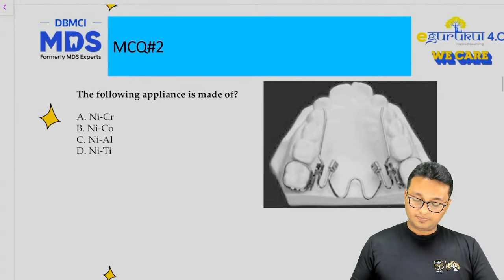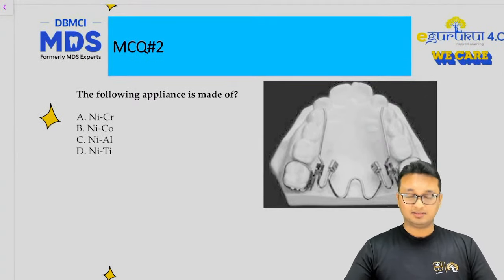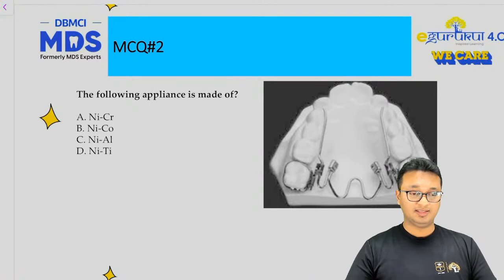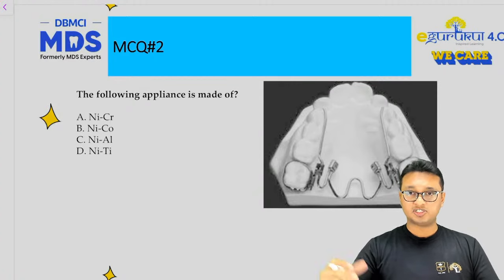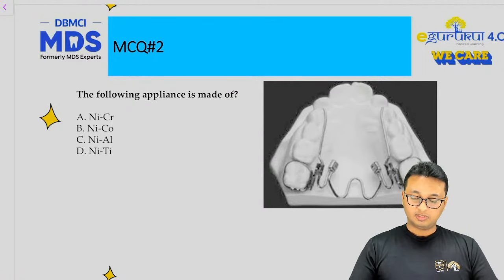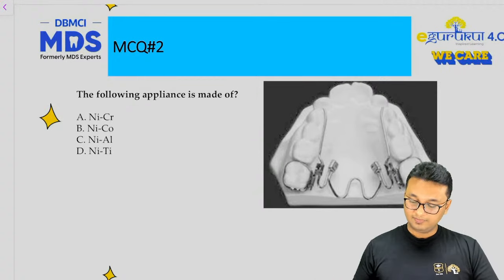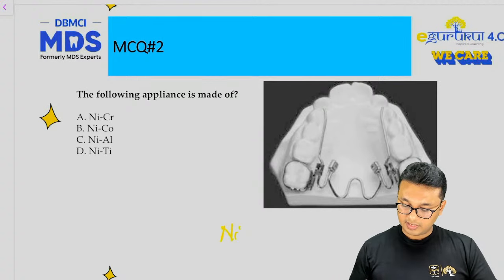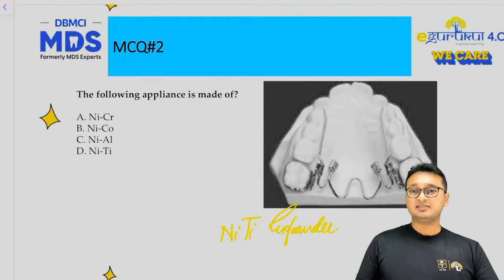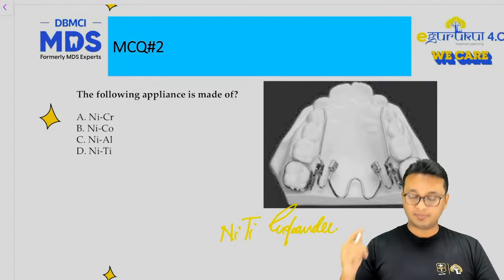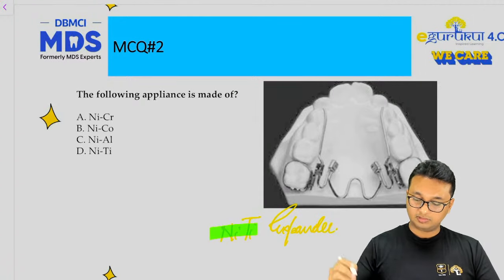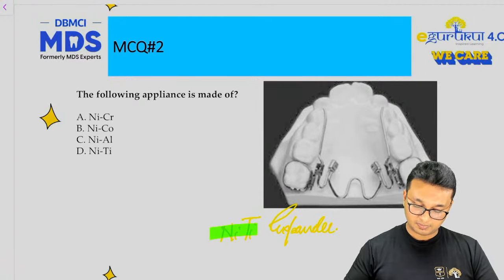The next question asked: what metal is this appliance made of? You have to identify the appliance — it is a NiTi expander. As the name suggests, it is incorporated in the name of the appliance: 'NiTi.' The most obvious answer is that it is made up of nickel titanium.